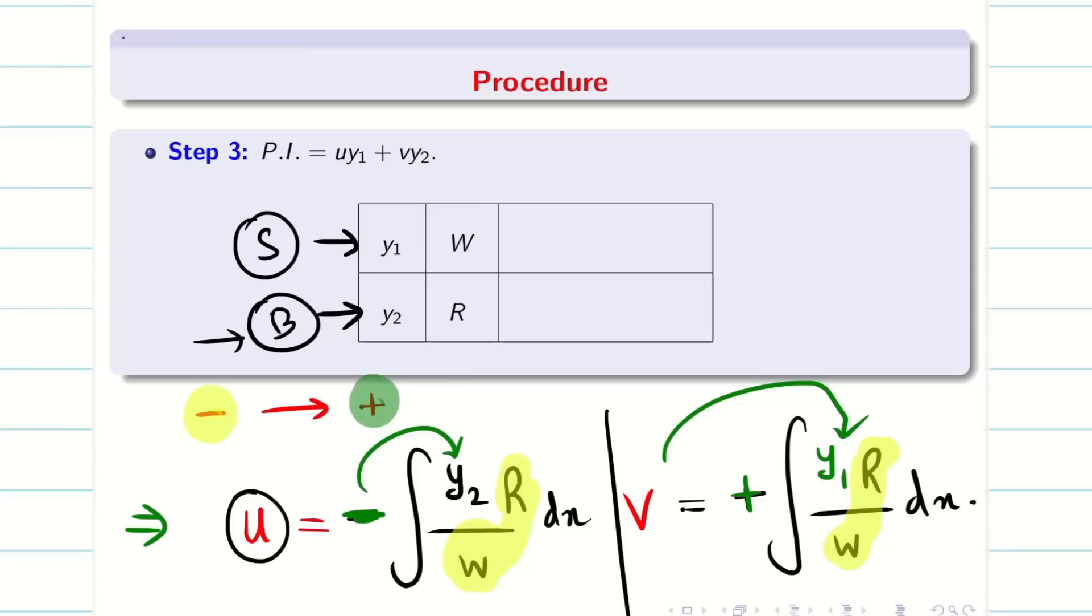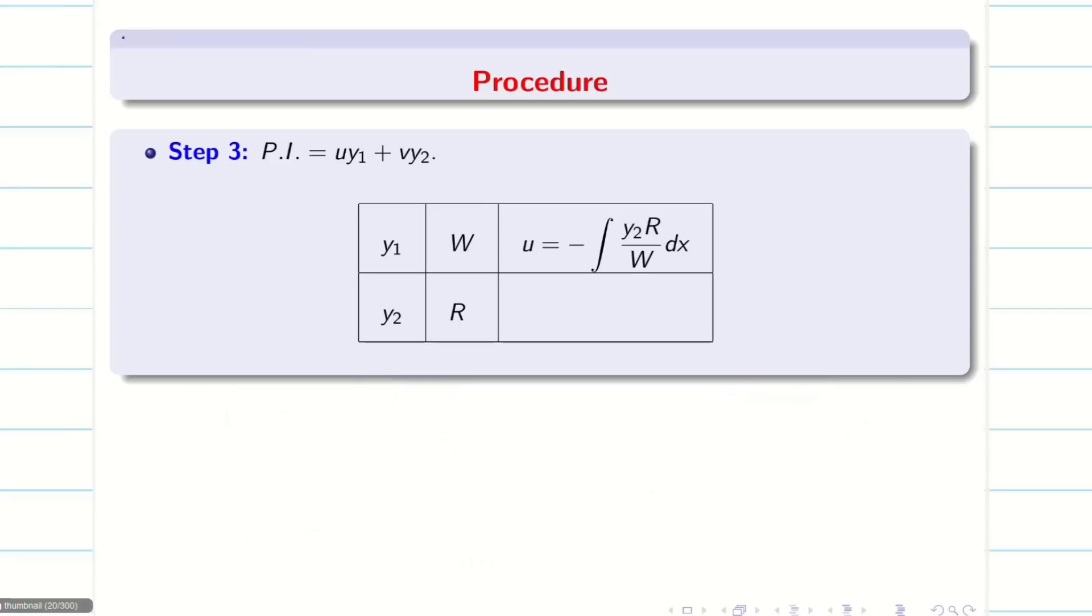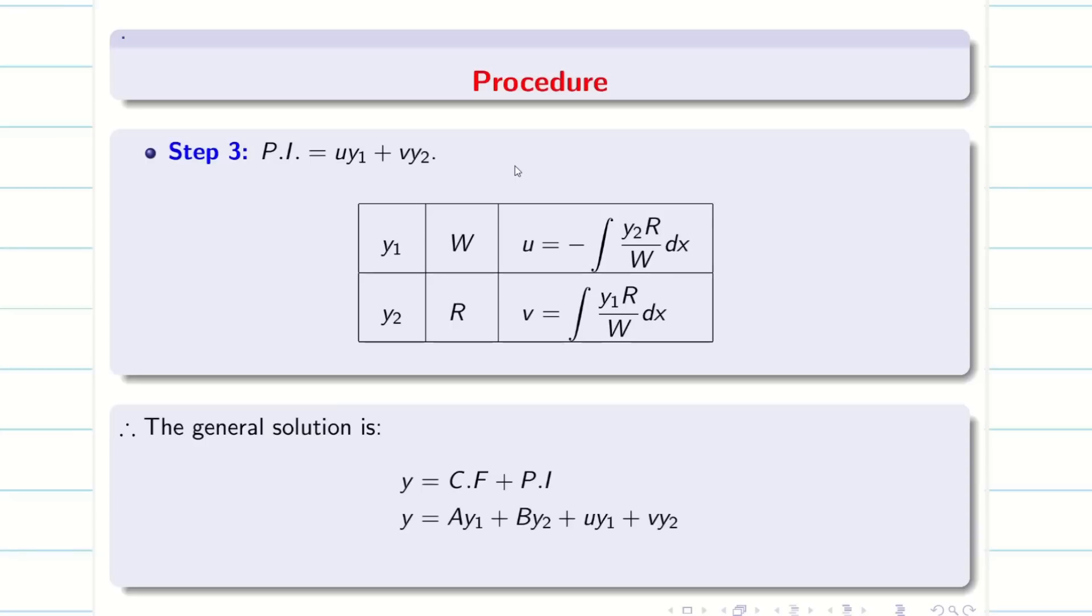Again, I'm saying there is no mathematics. Just for weak non-math students, I'm just giving this idea. Now the formula is going to be very easy. u is a younger one, so negative. v is the bigger one, positive. For younger one, I'm giving the bigger support. For elder, I'm giving the lesser support. R/W is going to be common for both, integral dx. Now, if you know the values of y₁, y₂, W, R, I can easily fill the table. Once you find u and v, then I can write my PI. Therefore, the general solution is y = CF + PI. That is my a*y₁ + b*y₂ + u*y₁ + v*y₂. We found the solution for the given problem using these steps.